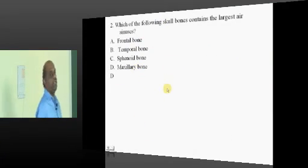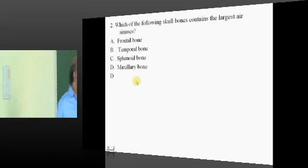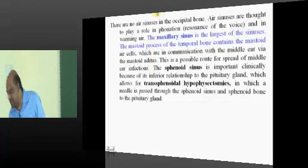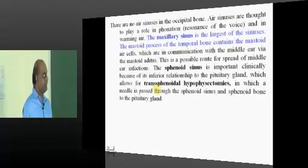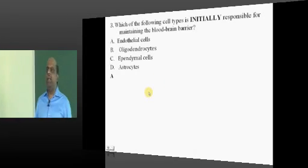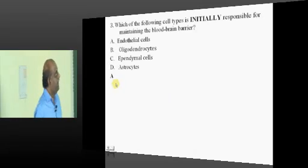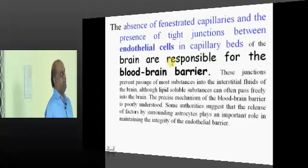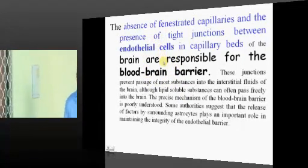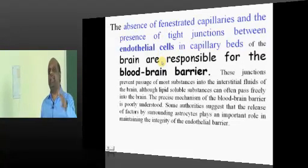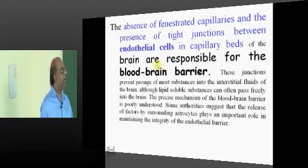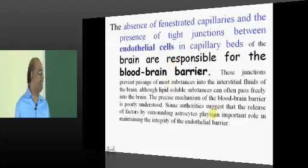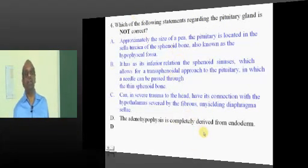Now, what is the largest air sinus? It is the maxillary sinus which is considered to be the largest of all the sinuses. But what maintains the blood-brain barrier? It is the endothelial cells which are typically responsible for maintaining the blood-brain barrier and there are no fenestrated capillaries. Absence of fenestrated capillaries and the presence of the tight junctions between the endothelial cells are the ones which are responsible for the blood-brain barrier.